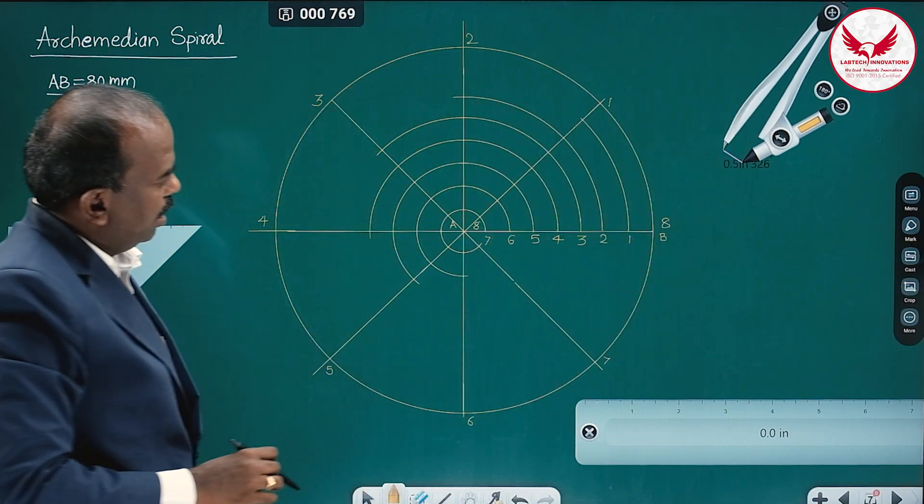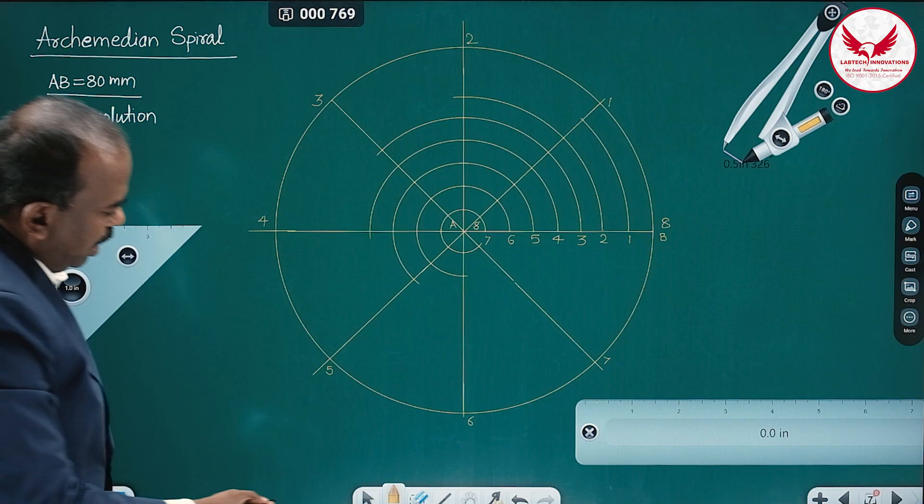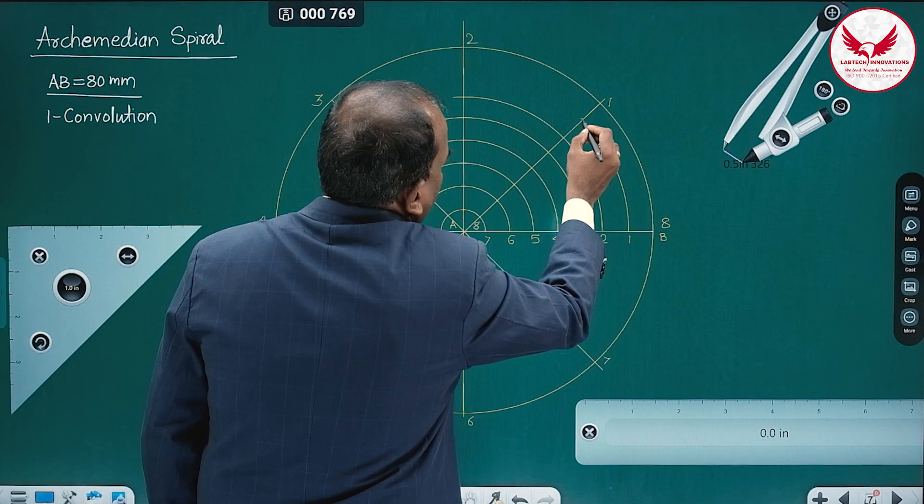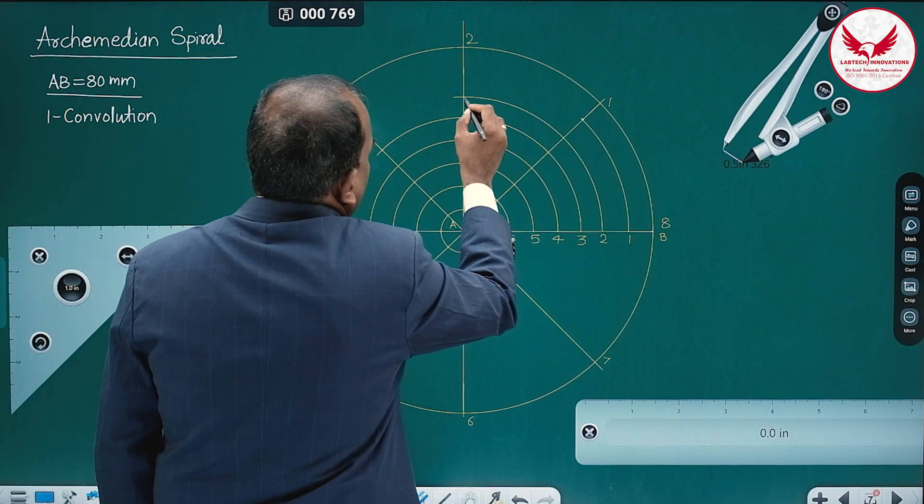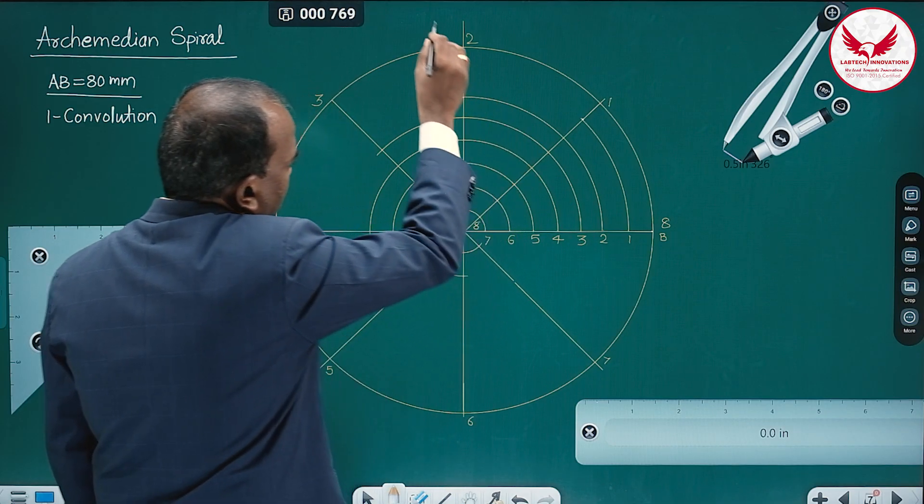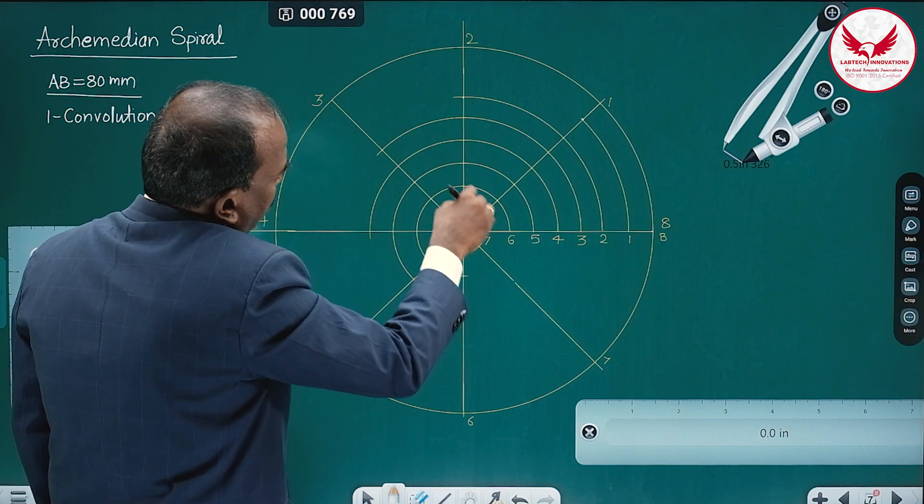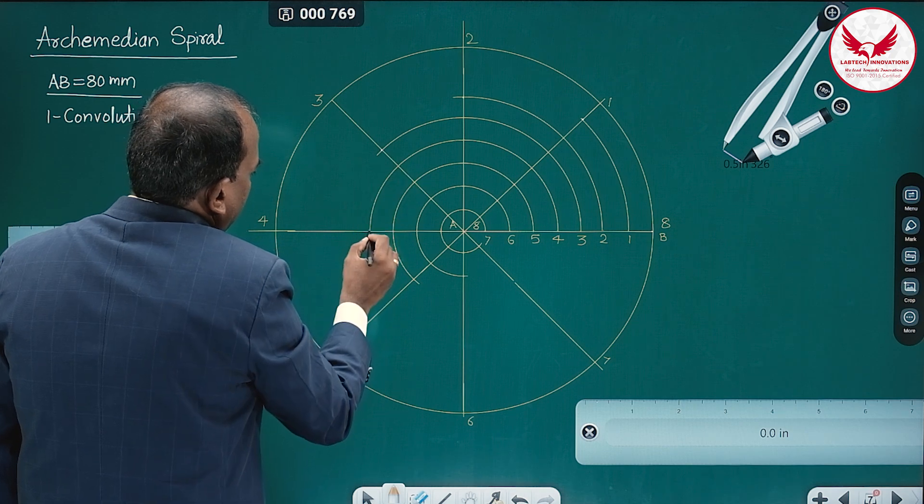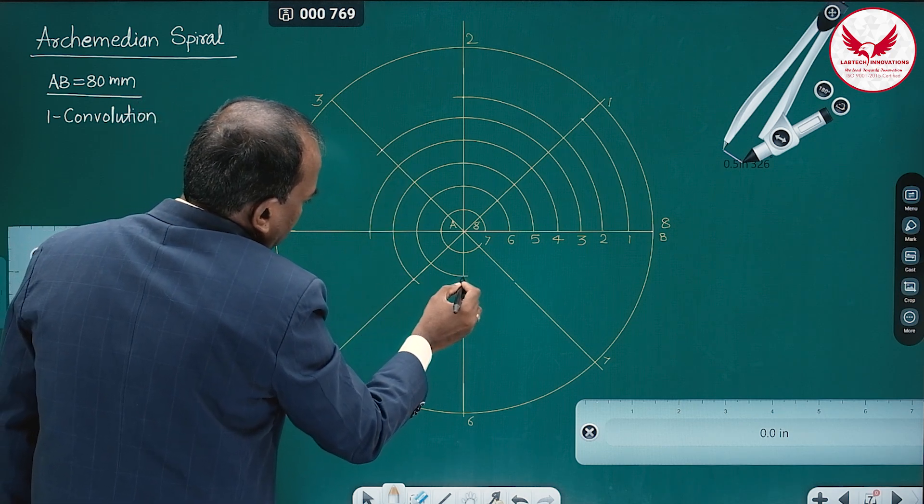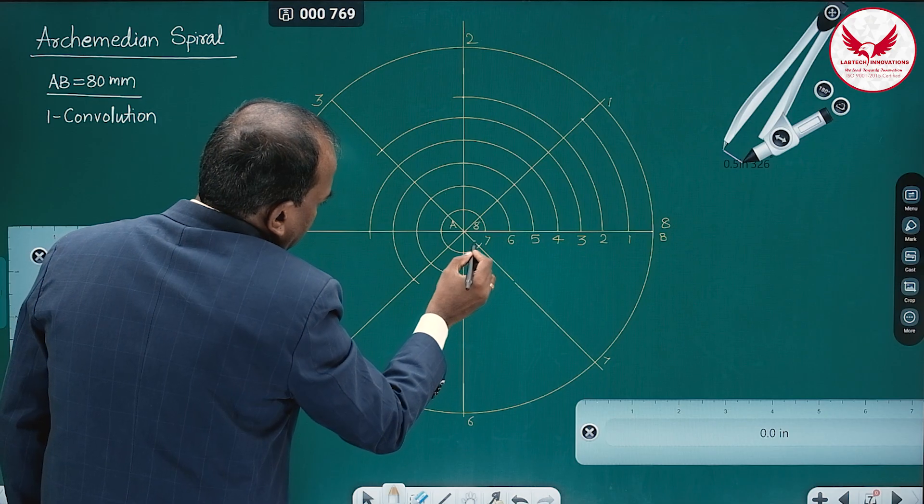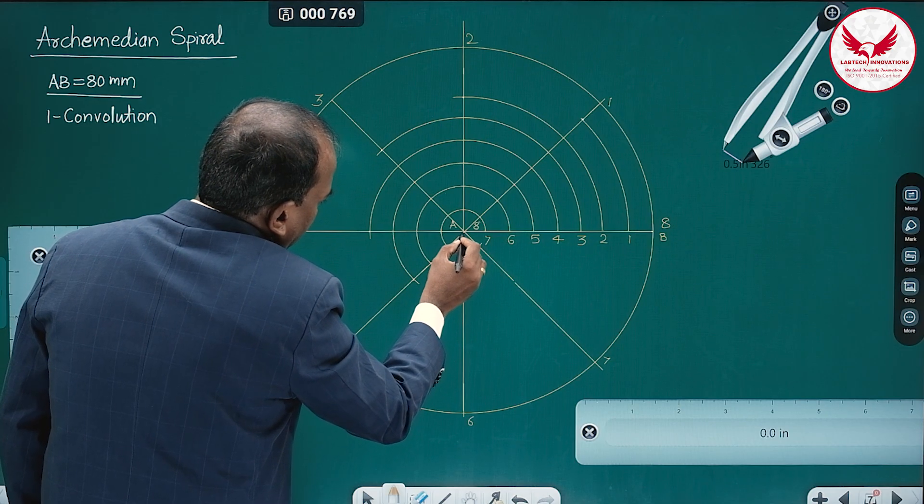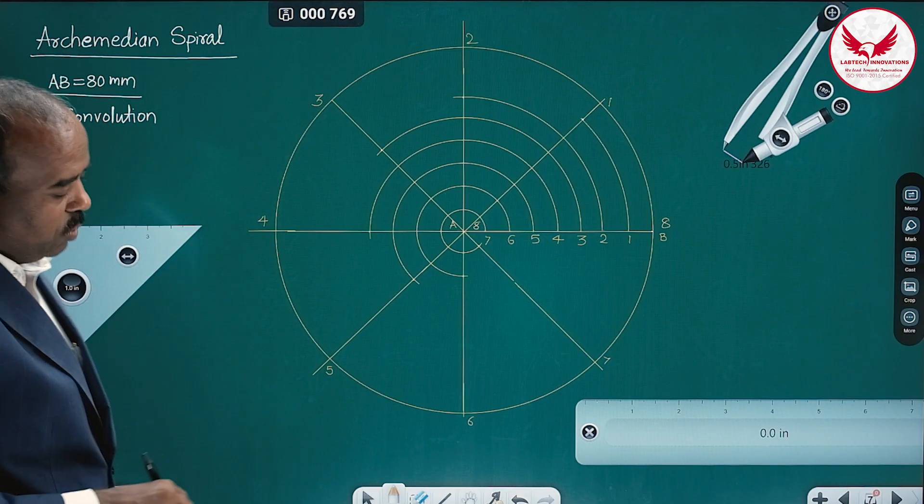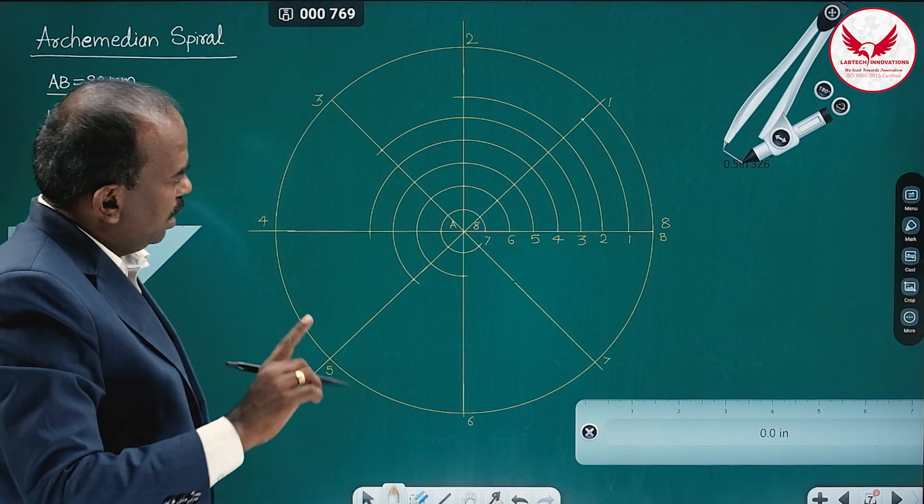So I will tell how we can mark these 8 points. Initial point is P, means at B. Next point is P1. Next 90 degree rotation, so it is moved by 2 centimeters inside. Then 3, it is 4, it is 5, it is 6, it is 7. And finally we will reach to the other end, which is going to be point P8.